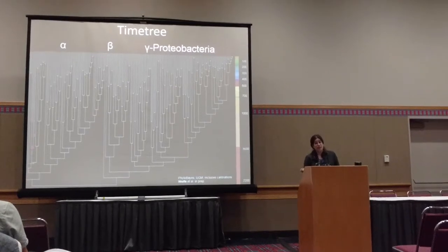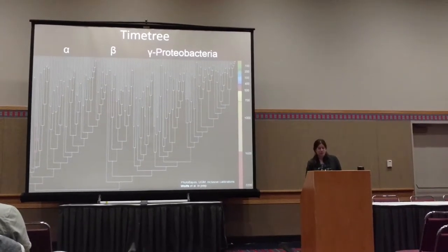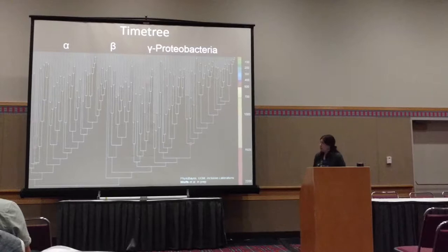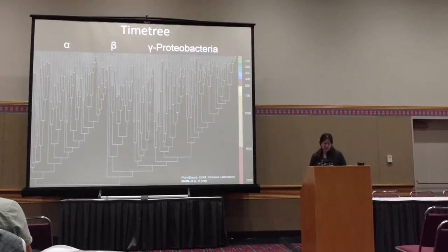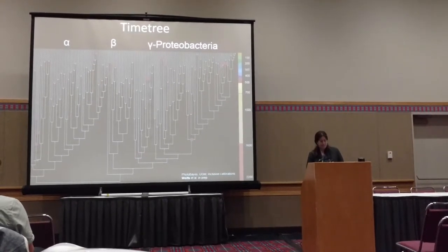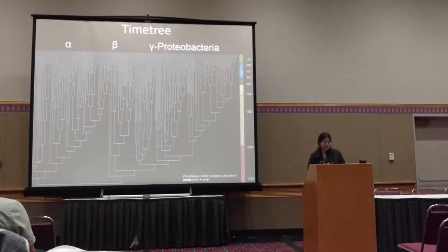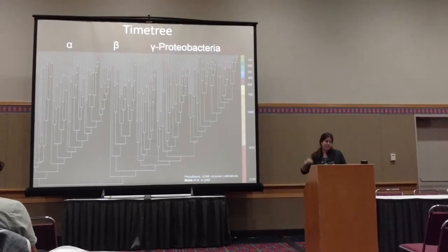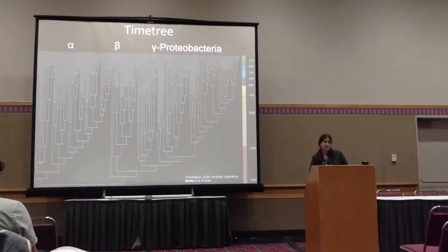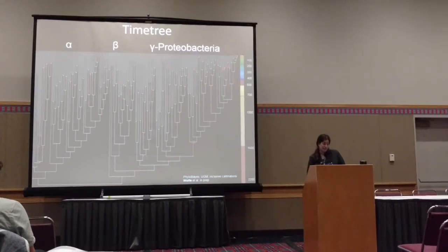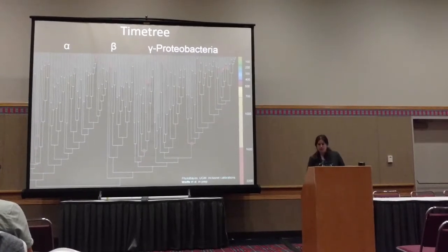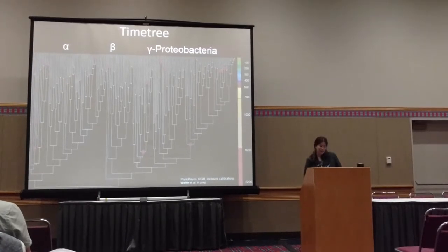These are the two horizontal gene transfers I mentioned within gamma proteobacteria. And then these are several co-speciation events that are generally within the Mesozoic and Cenozoic. There's also one from an organic biomarker that is exclusive to this clade of bacteria.